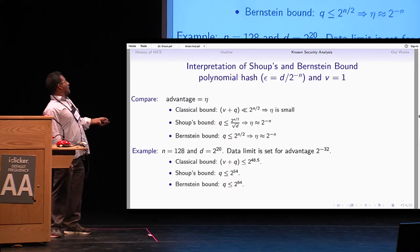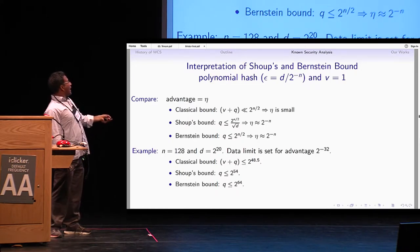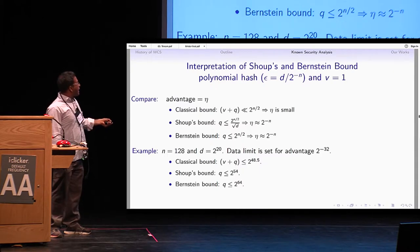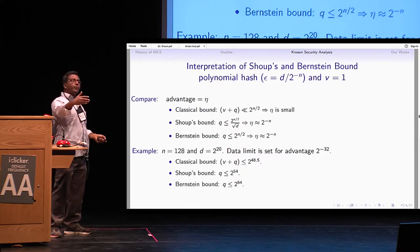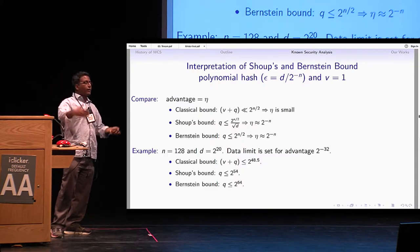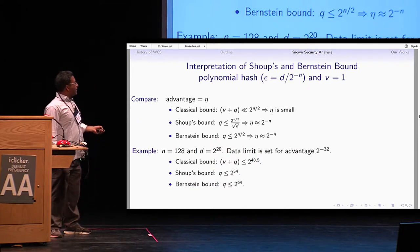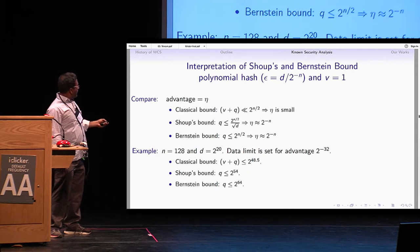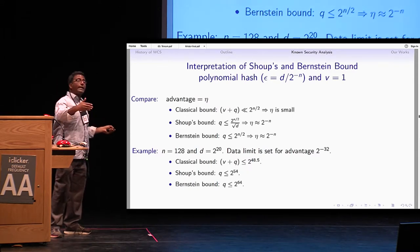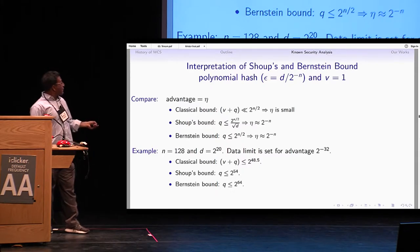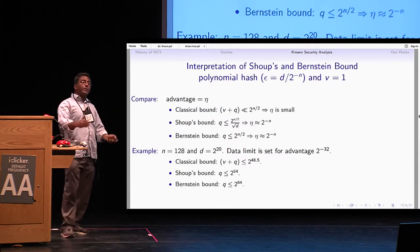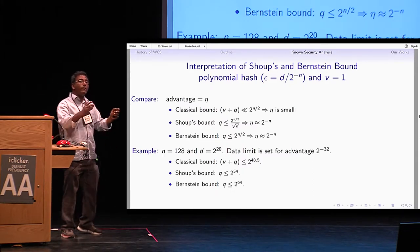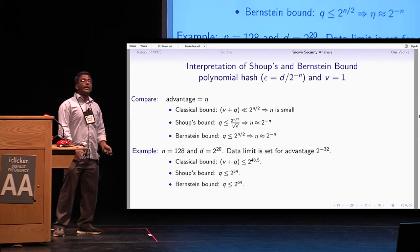In particular, for a 128-bit block size, Shoup's bound grants negligible advantage of order 2^{-128} if the number of forging attempts is small, but the data limit is around 2^{54}. With the improved Bernstein bound, the data limit extends to 2^{64} — even using 2^{64} queries you are still safe.